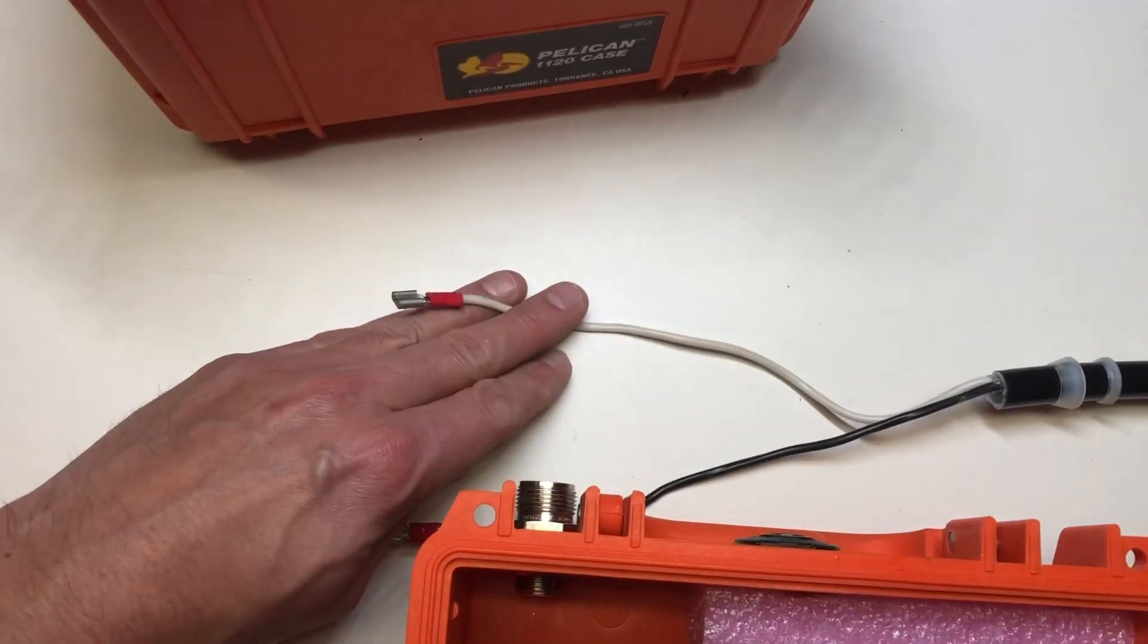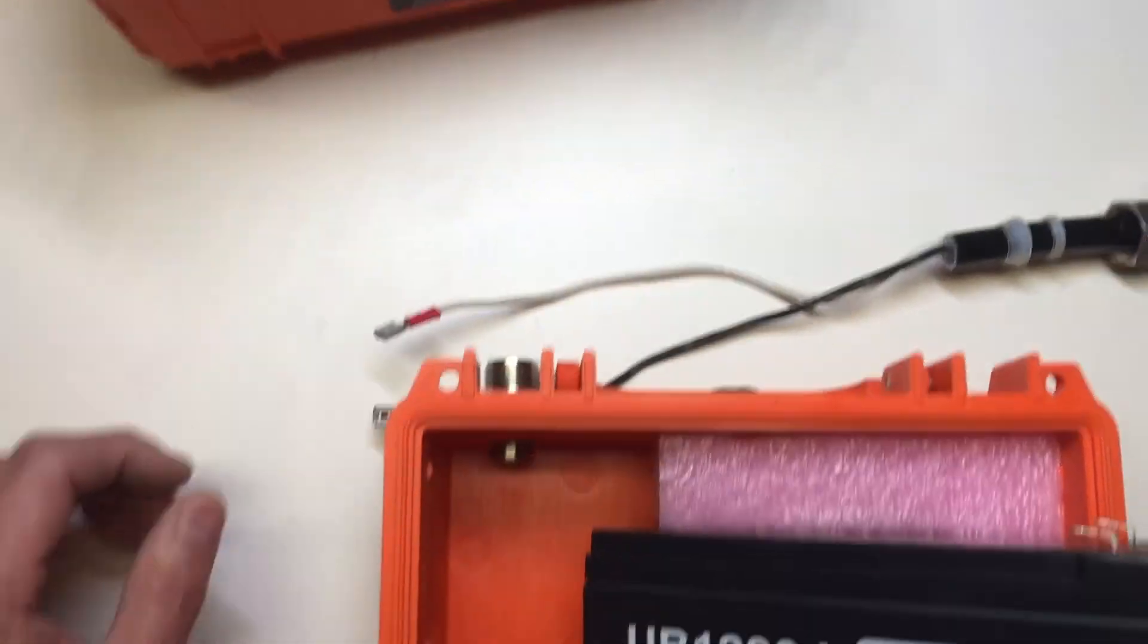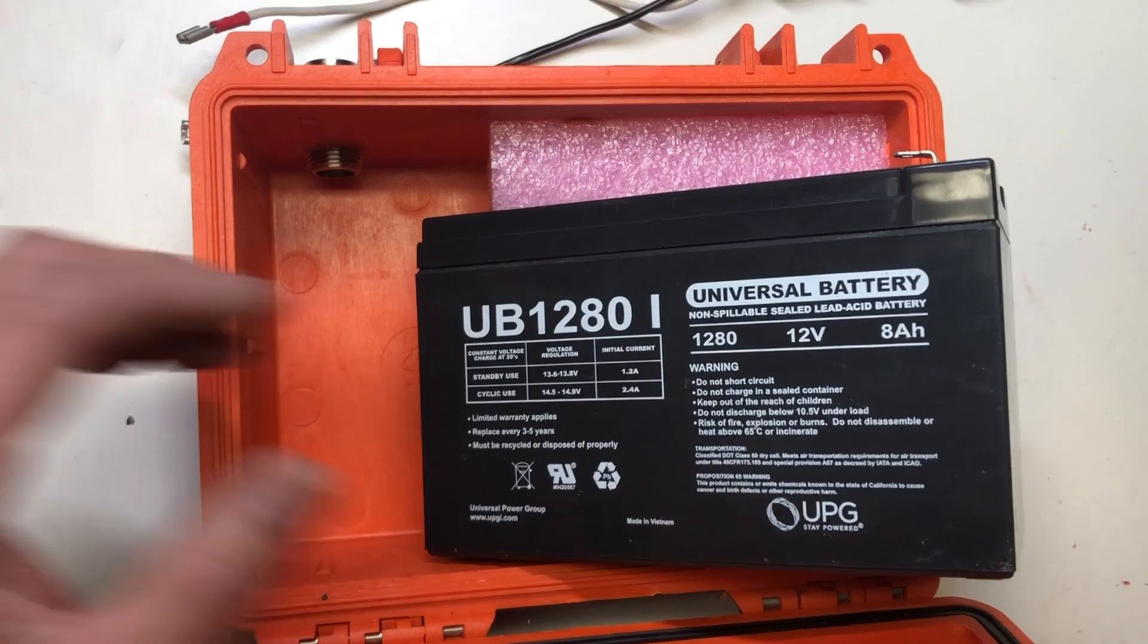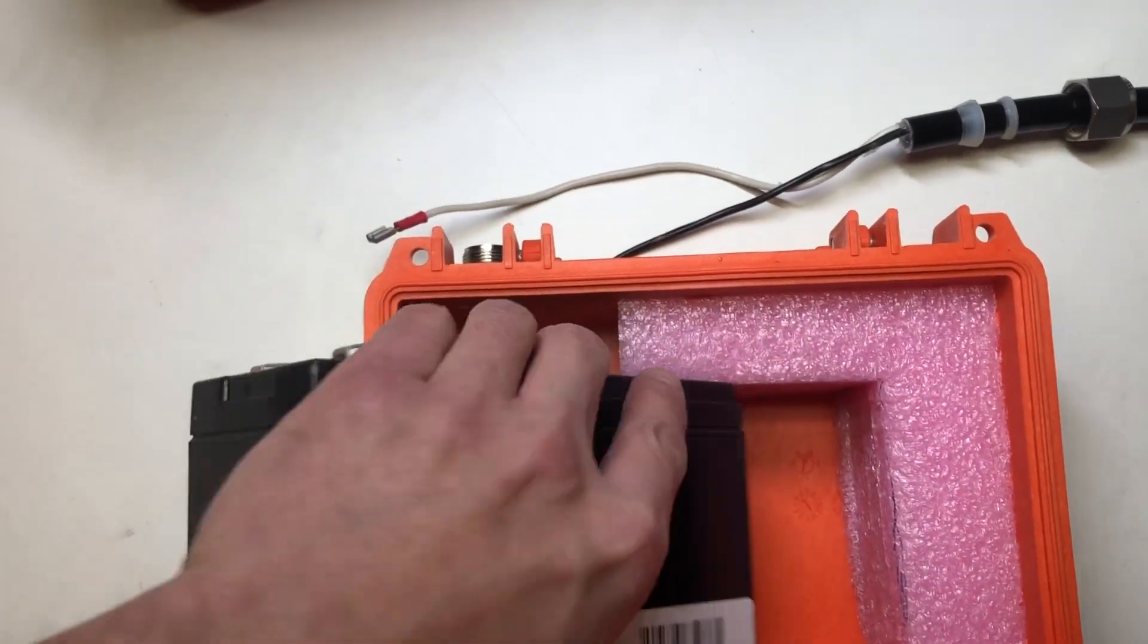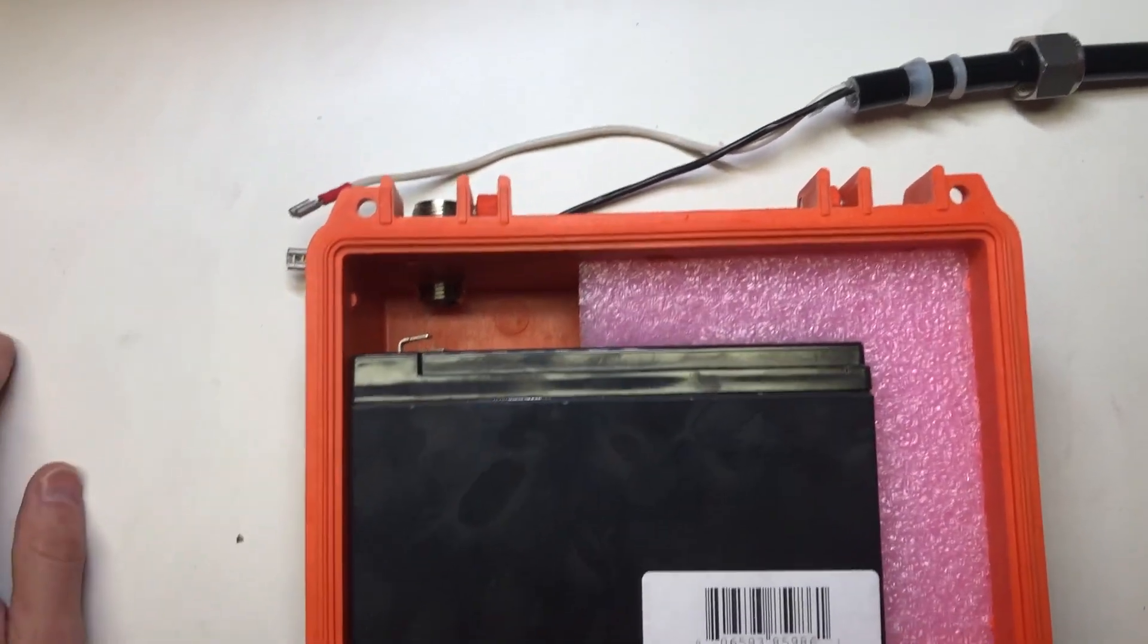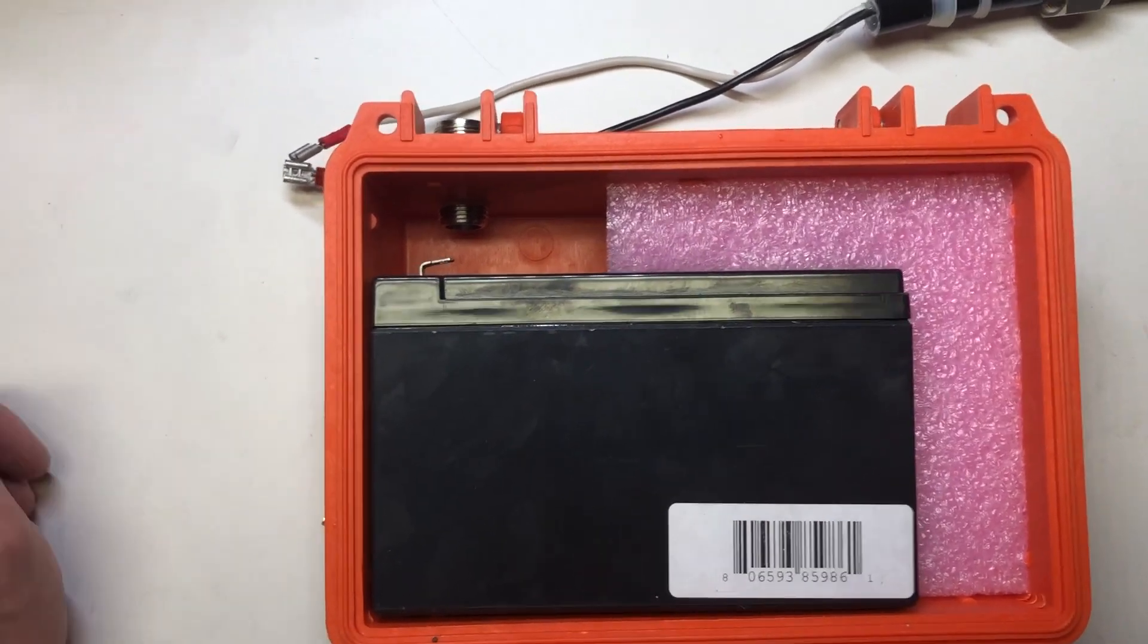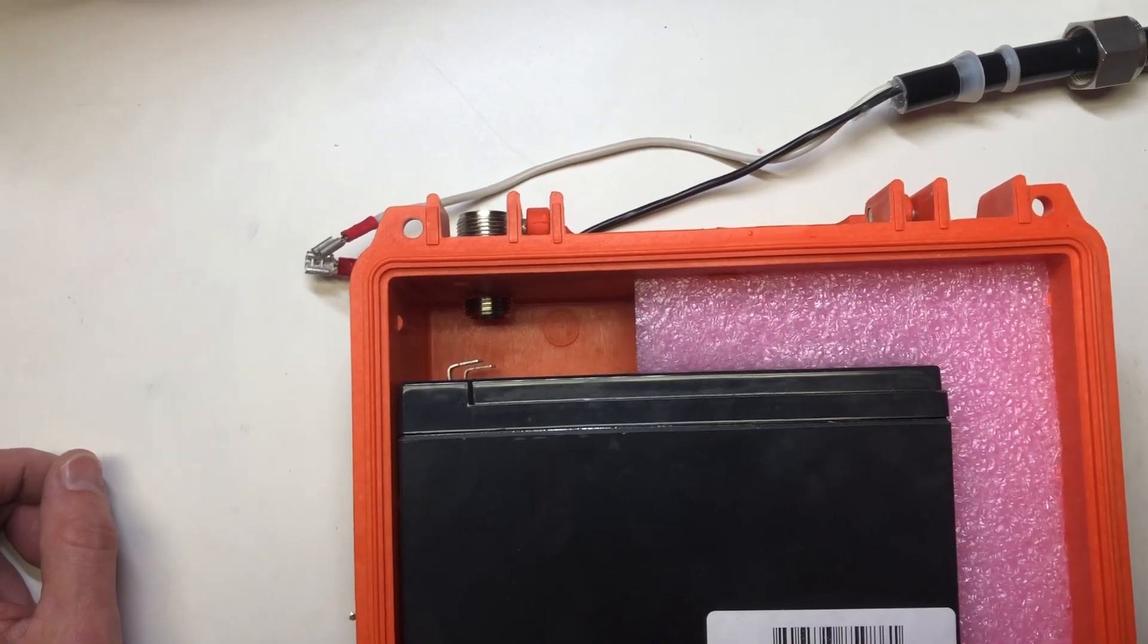On the other end, we just have the crimp connectors that'll allow you to connect to the battery. What I was using here is just a 12 volt, 8 amp hour battery. These fit really nicely into these 1120 cases and I just used a polyethylene foam sort of cut out. You could use anything like styrofoam just to help keep the battery in place and keep it from moving around, which could eventually lead to connection failures or something like that.